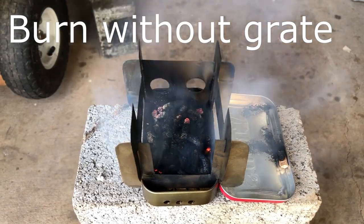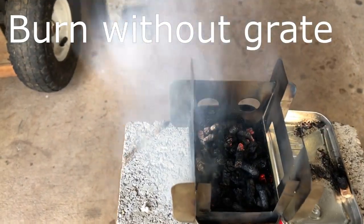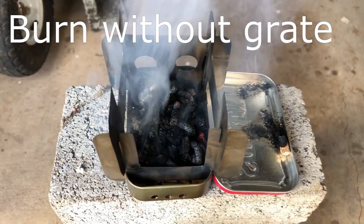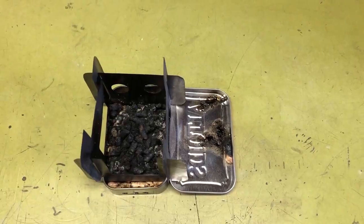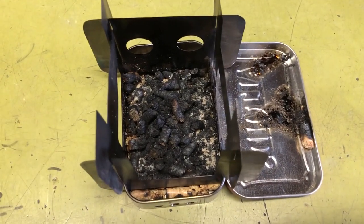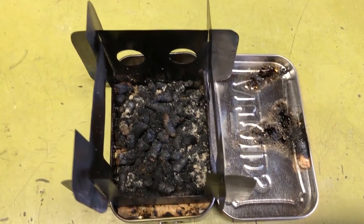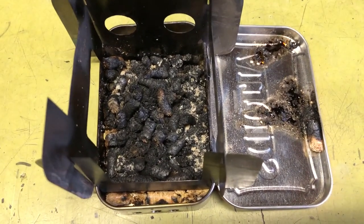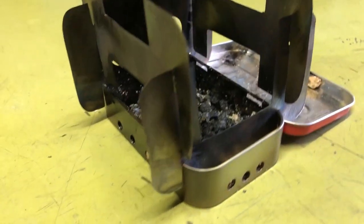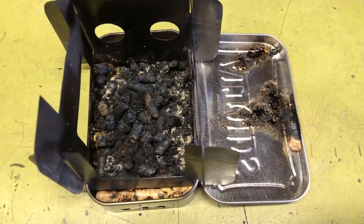This is without the screen. And you can see it's not getting very good airflow. In fact, it's pretty much just down to a smolder right now. Okay, here are the remnants of the burn without the grate, but with the vent holes. The vent holes really didn't make much of a difference. Still see a lot of residue in there. Even though I had these vent holes, it wasn't really enough. You need to get air underneath it. So, I'd say this is a failure.